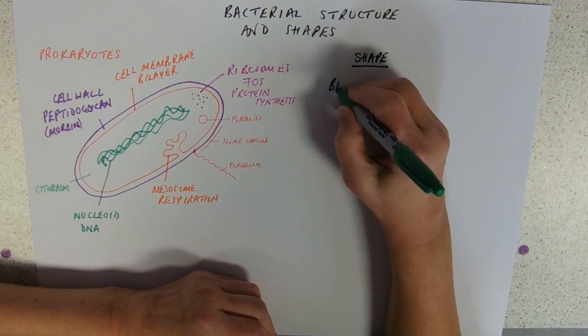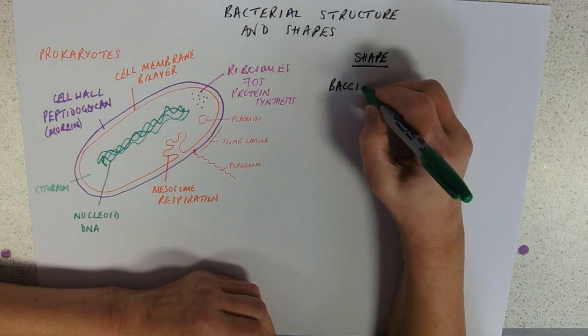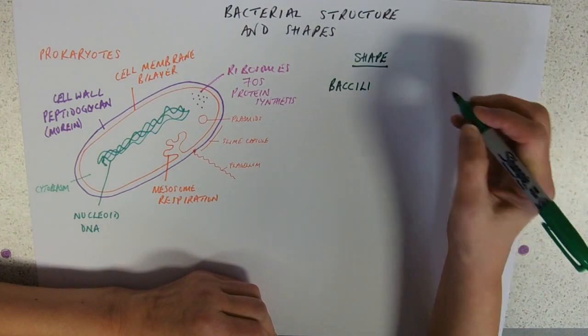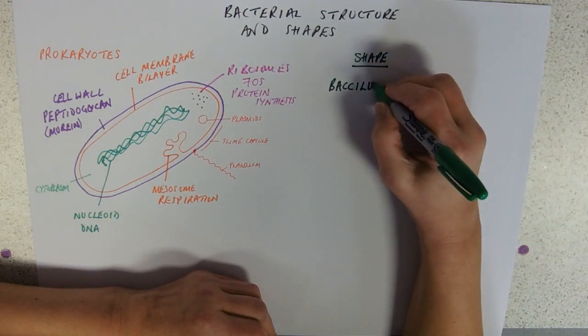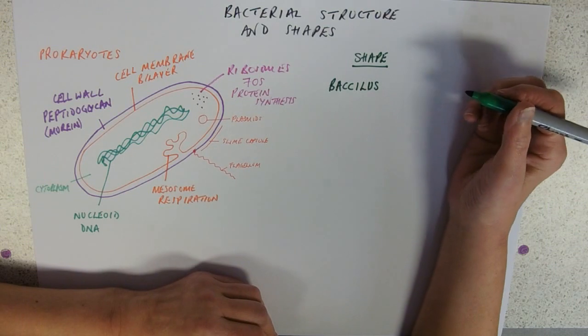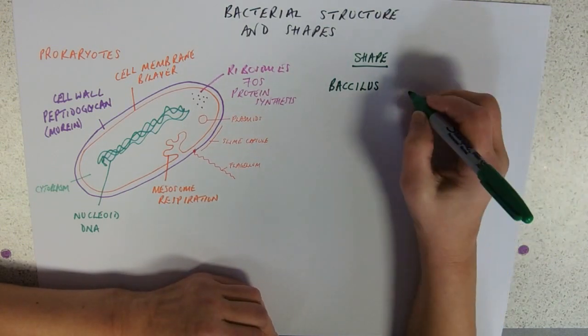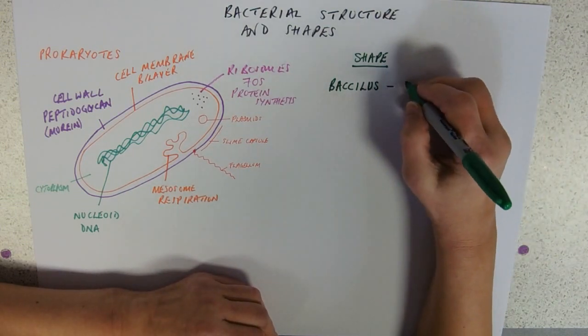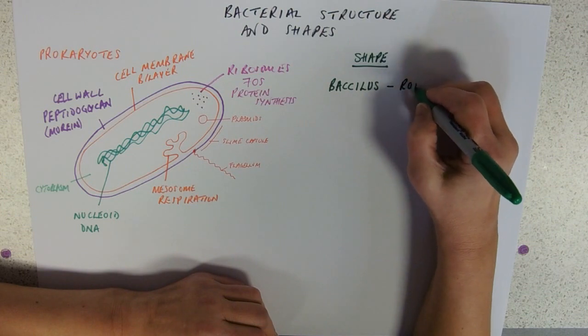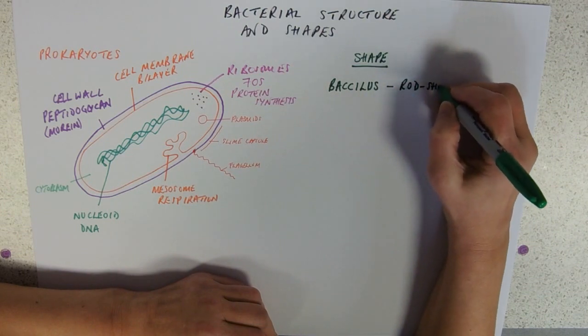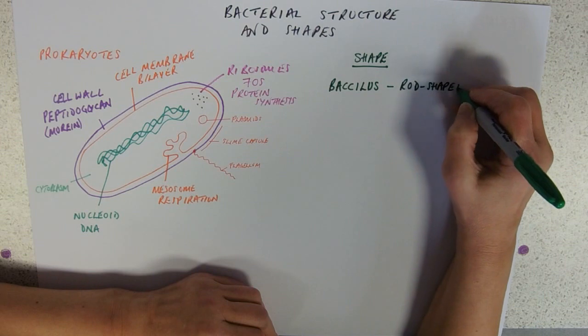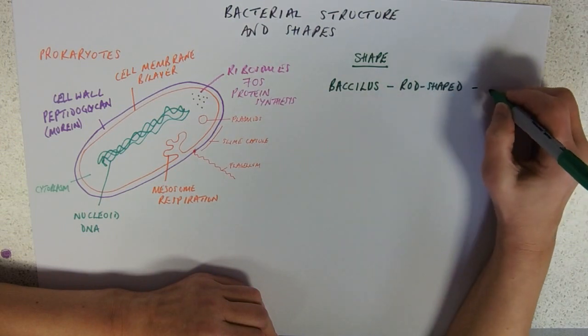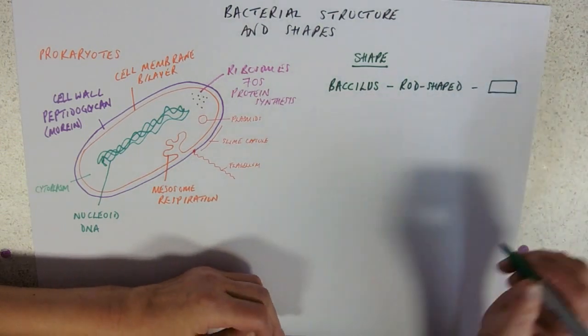And they are categorised into three basic groups. So, we've got the bacilli, that's the plural, the bacillus, bacillum, is the singular. These are rod shaped. And are generally drawn as a little oblong.